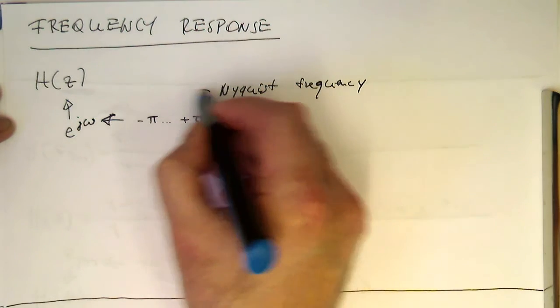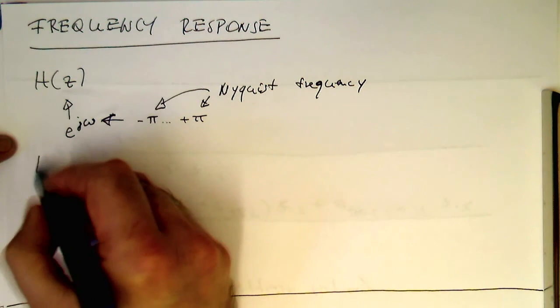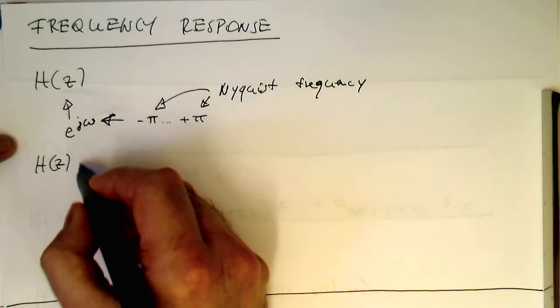And this is here the negative Nyquist frequency. So, in our filter here, we have just to recap how this looked like,